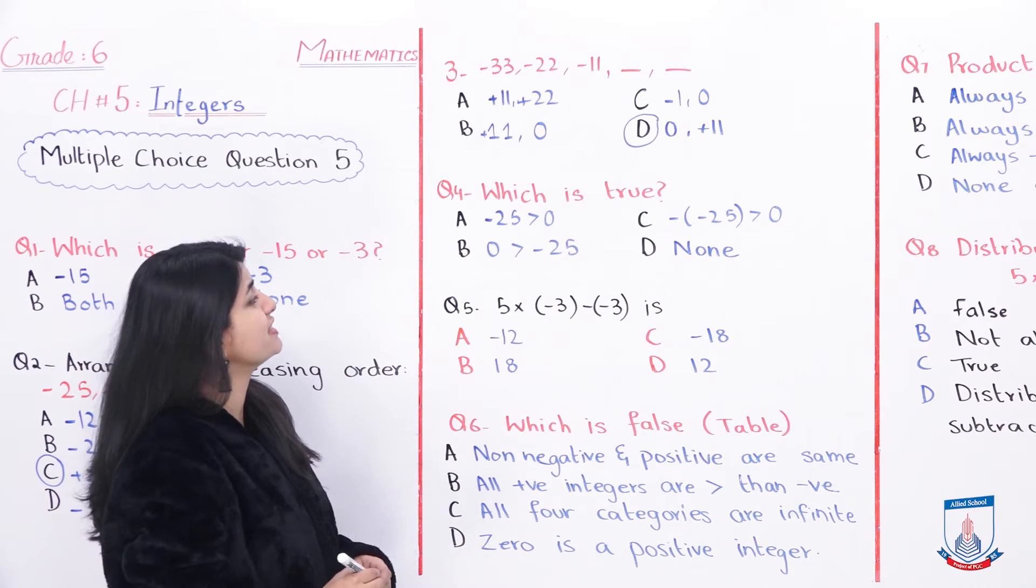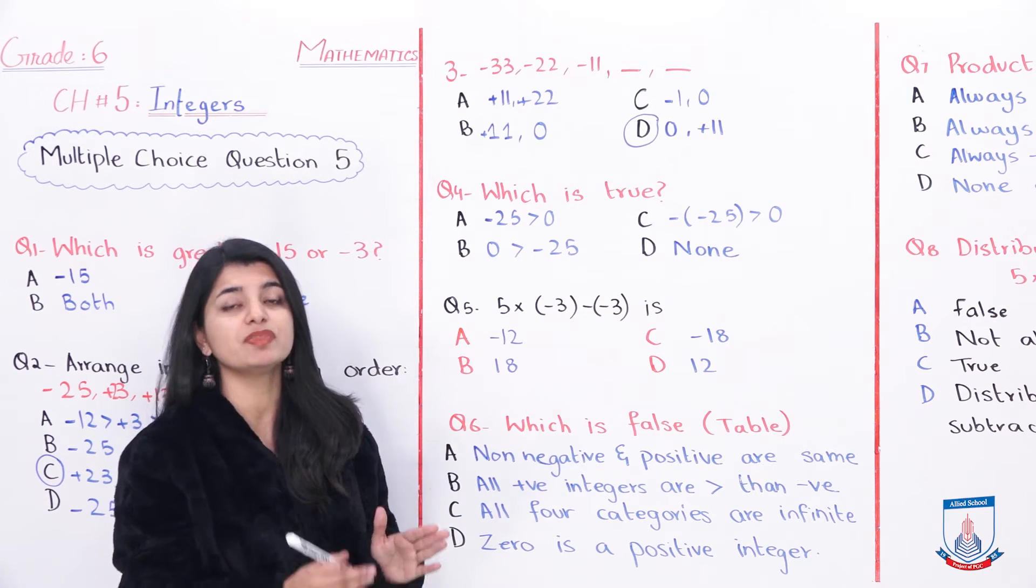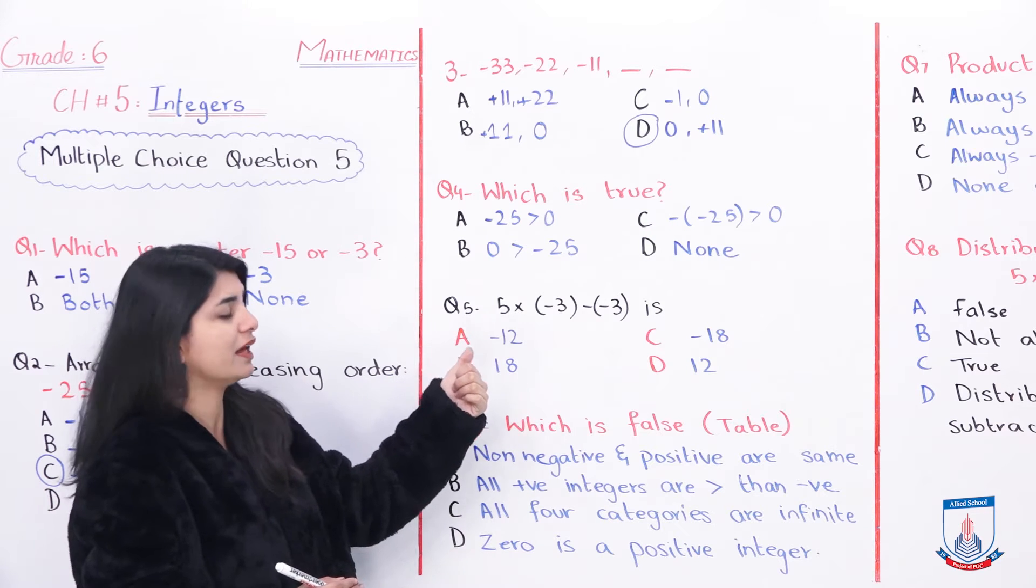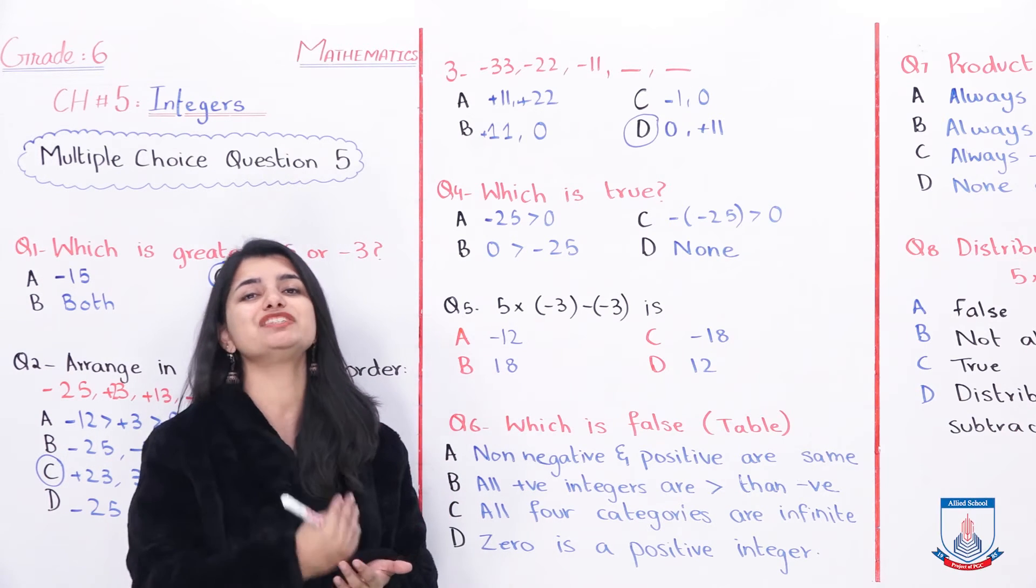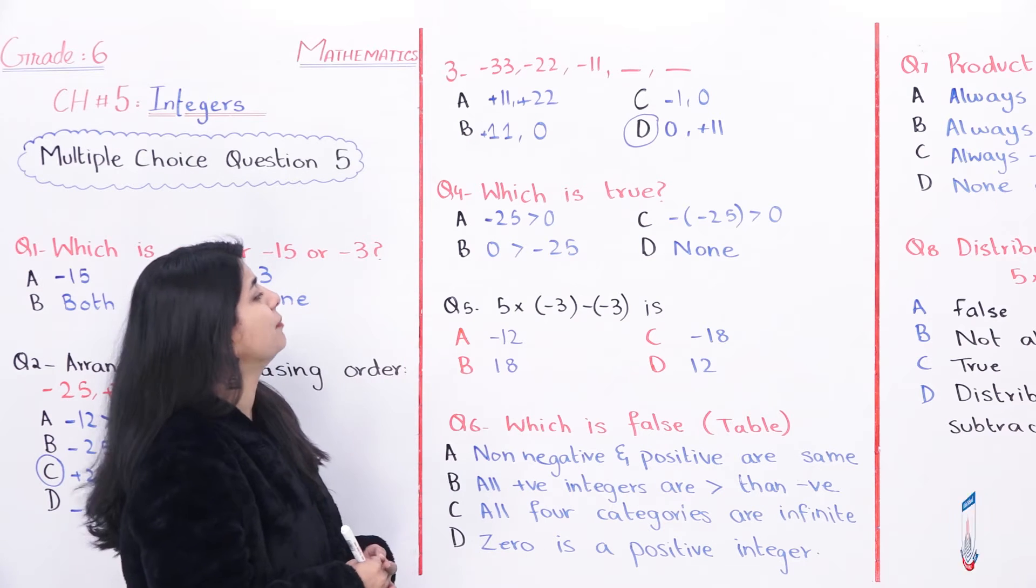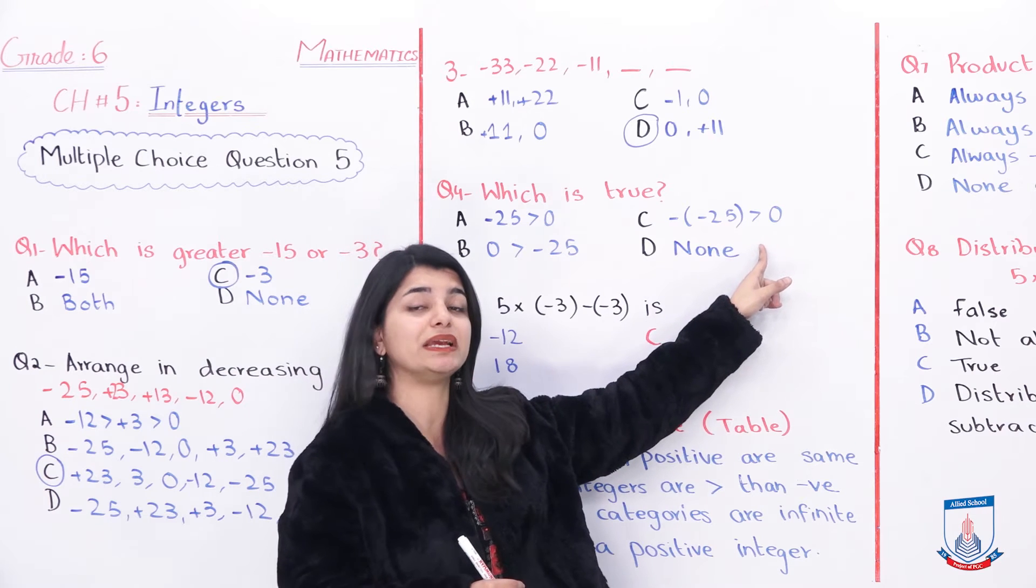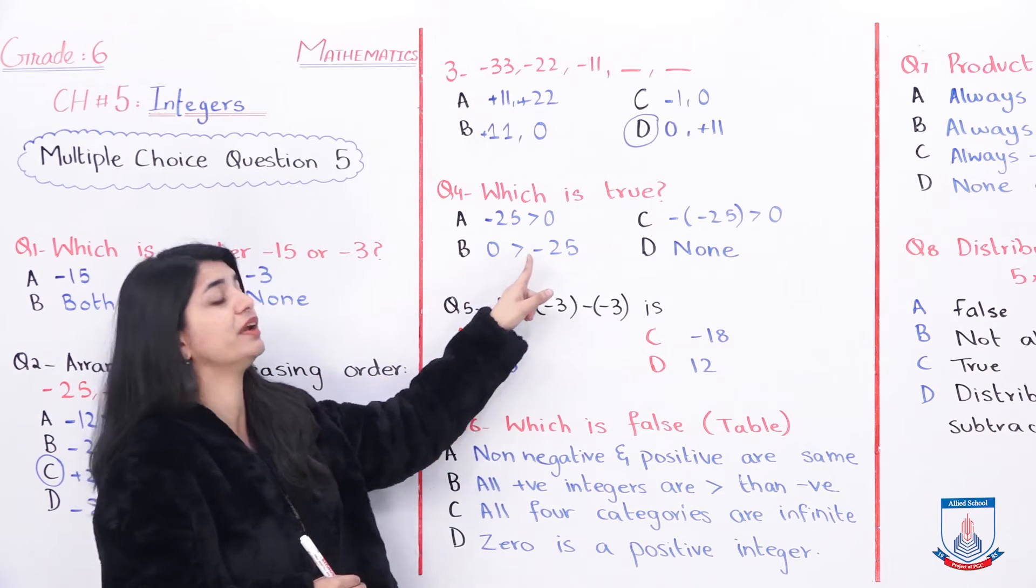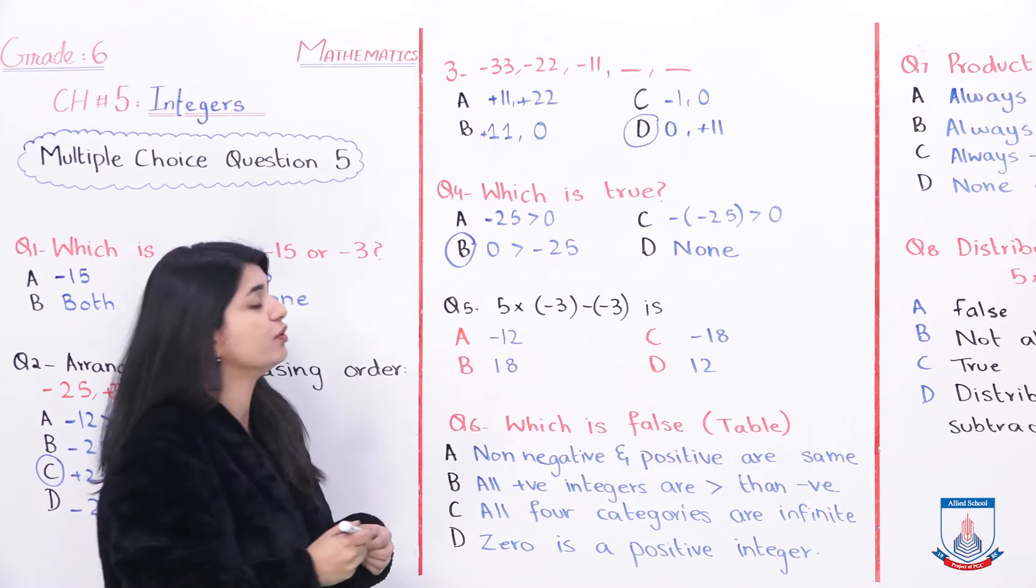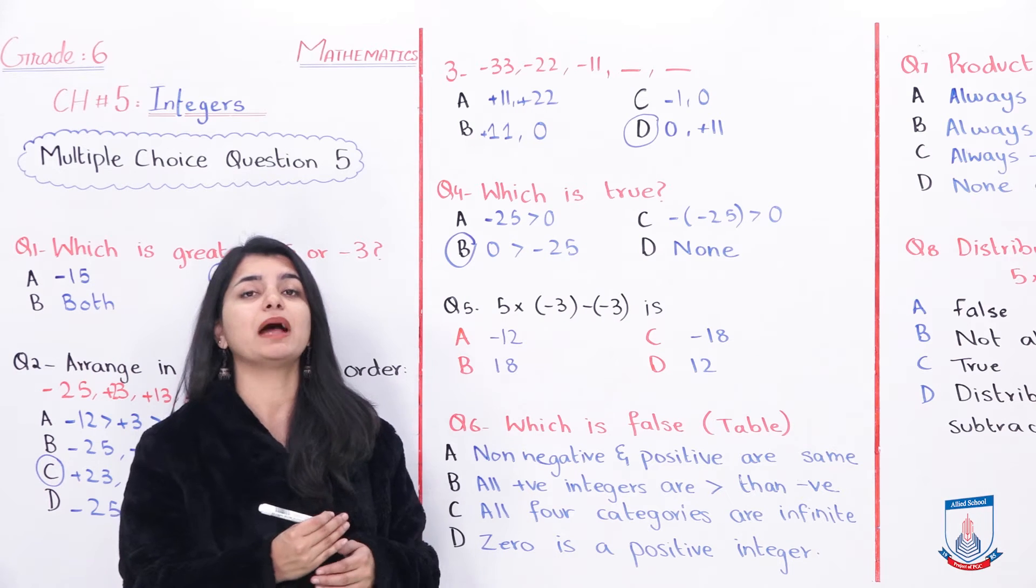Fourth MCQ is which statement is true? They have told you that negative 25 is 0 to the left side. You have to tell the relationship between minus 25 and 0. Minus 25 is greater than 0, is that possible? No, because it comes from 0 to the left on the number line and it is a negative number. All negative numbers are smaller than 0. 0 is greater than negative 25 - this option right here is 100% correct. Why? Because 0 is obviously to the right of negative 25 on the number line and it is bigger than the negative number. So here you will select option number B.